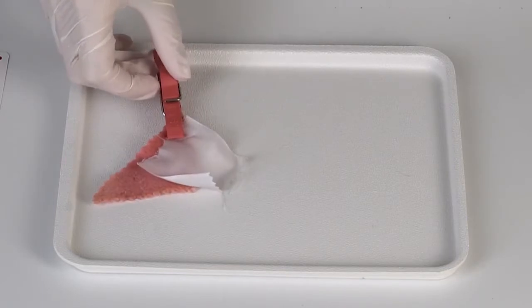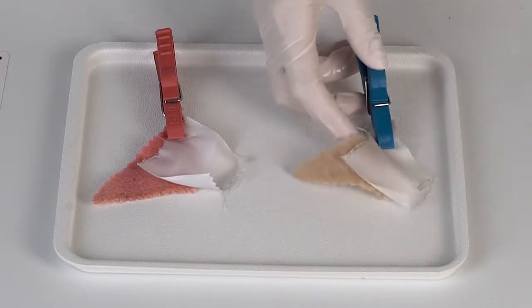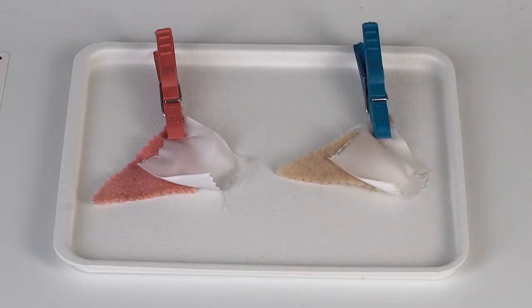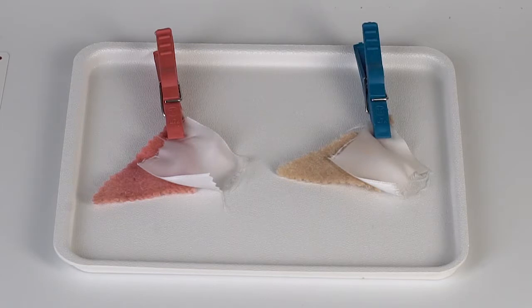As we see, only one piece of fabric remained colored. Unlike carmine, eosin binds to proteins that wool consists of. Polyester does not bind to any coloring at all.